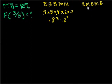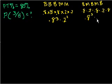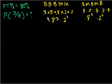What about this combination: basket, miss, basket, miss, basket? That's 0.8 times 0.2 times 0.8 times 0.2 times 0.8. We can rearrange this — multiplication order doesn't matter — so this is also 0.8 times 0.8 times 0.8 times 0.2 times 0.2, which is 0.8 to the third times 0.2 squared. Every combination of three baskets and two misses has the same probability.